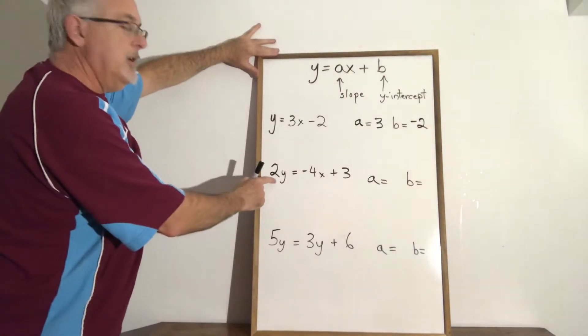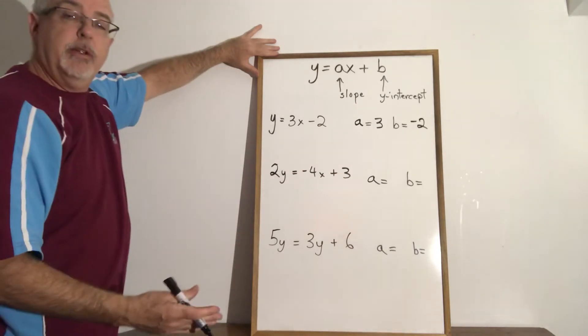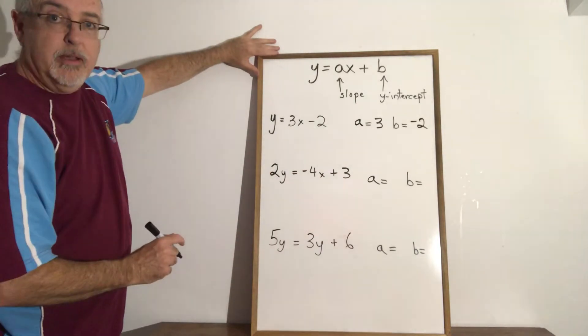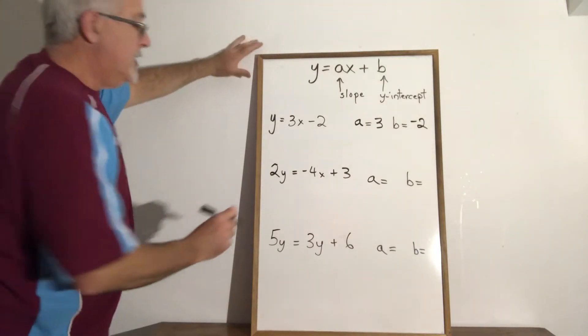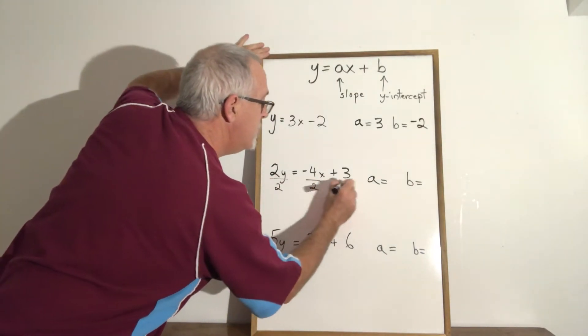In the second equation I can't say that the slope is negative four and the y-intercept is three because my y is not isolated yet. But I can do some algebra to isolate it. In this case all I have to do is divide everything in the equation by two.